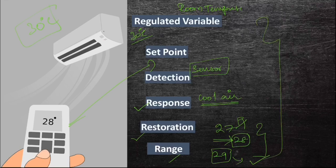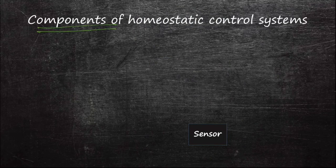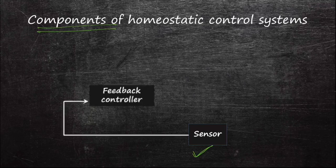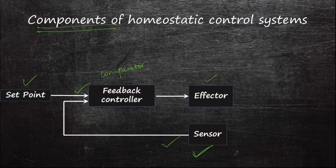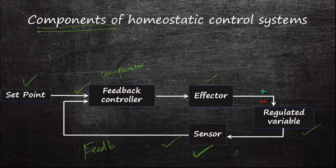Let's discuss the components of the homeostatic control system. There is a sensor which detects changes in the variable and sends this information to a feedback controller, which is part of a central comparator. It compares the set point value with the sensor-detected value, and if there is a change, it sends information to the effector, which influences the regulated variable again. This is called a feedback loop.